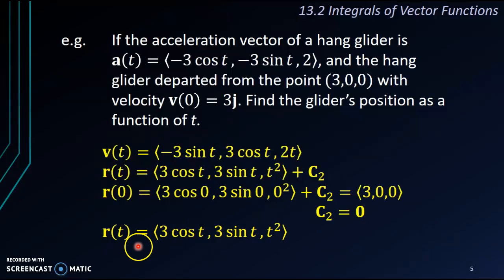vector are the same, that means our C₂ is also a 0 vector. And therefore, we get our r(t) equals to (3 cos t, 3 sin t, t²).